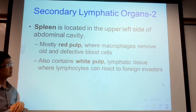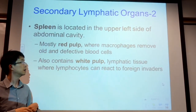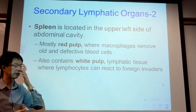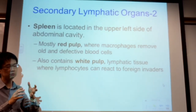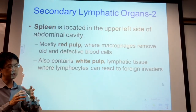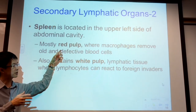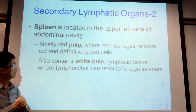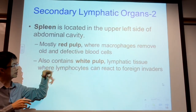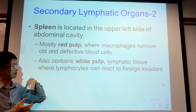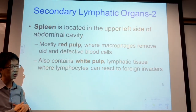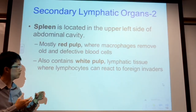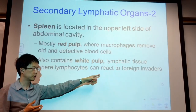The spleen is in the upper left of the abdomen. Inside the spleen there are two regions: red pulp and white pulp. The red pulp is where old red blood cells are broken down. The white pulp is where lymphocytes fight foreign invaders.